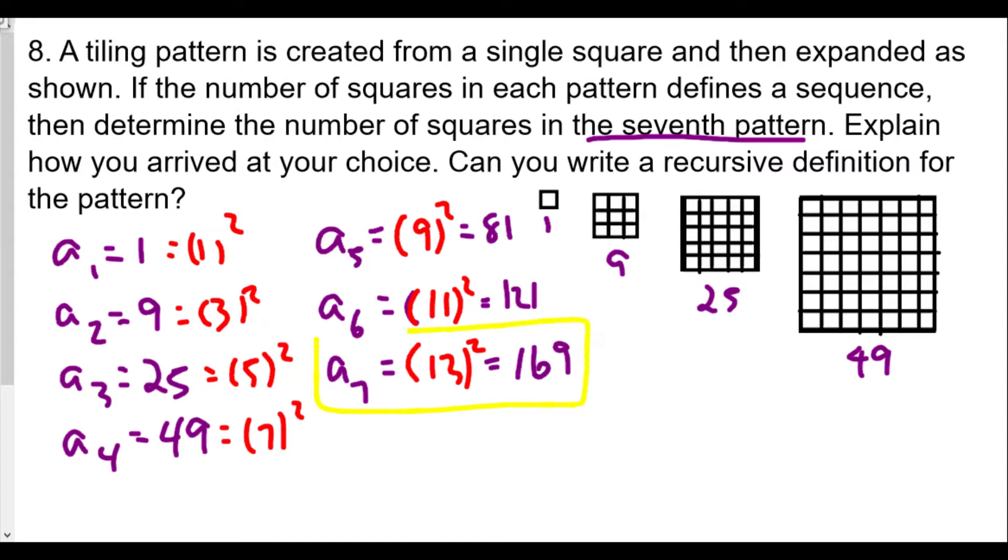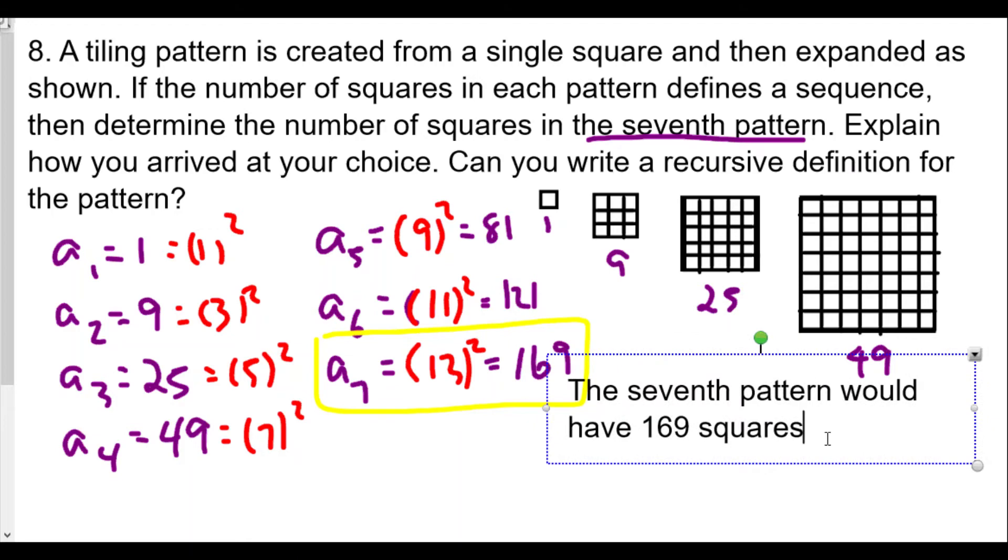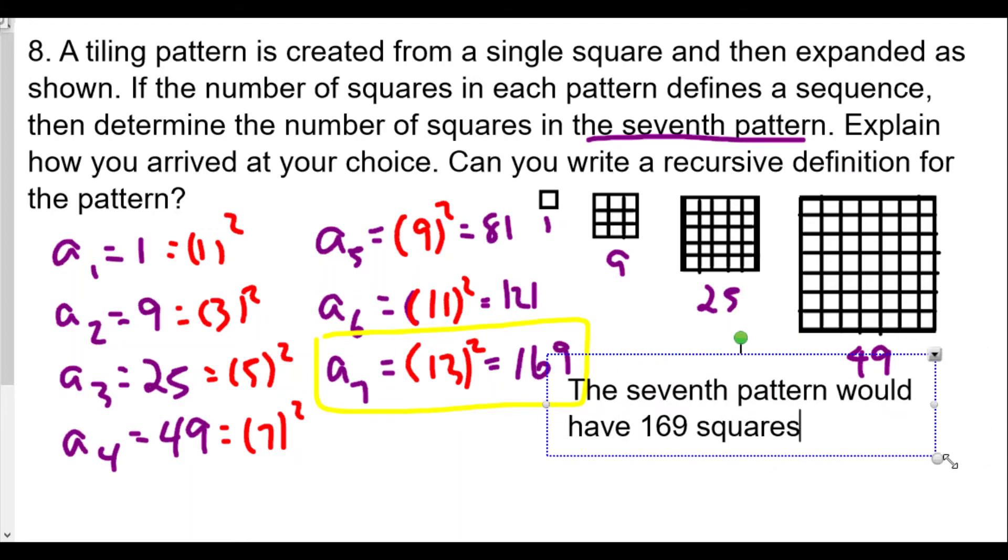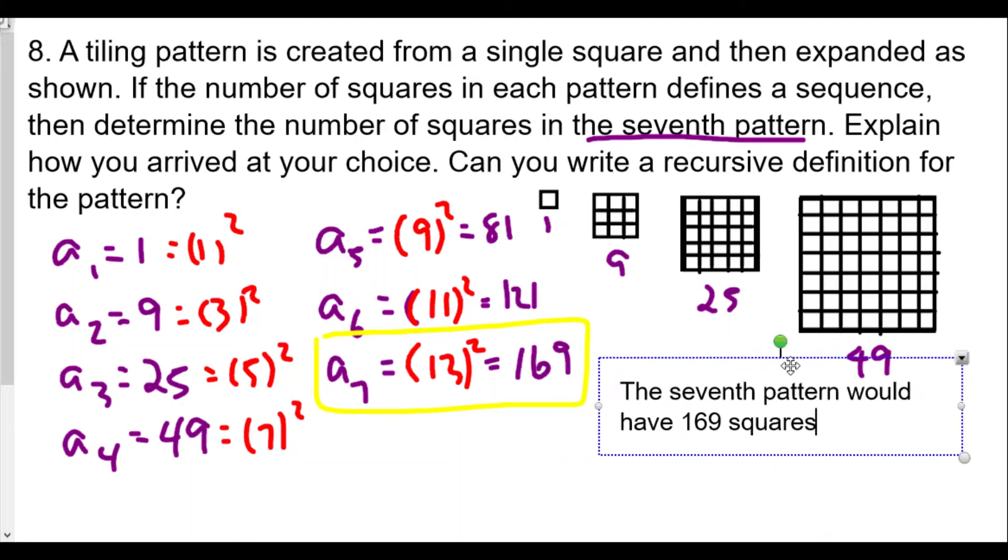So this is the answer for our first question, the seventh term would be 169 squares. Okay, so we'd write down in this case the seventh pattern would have 169 squares. Now I'll lower that a little bit so you guys can see that. Okay, not so bad hopefully.